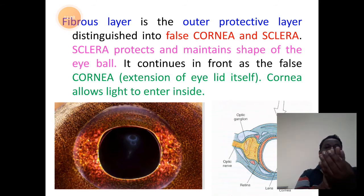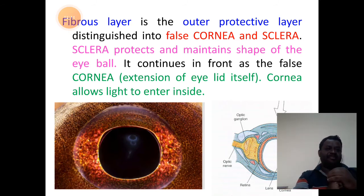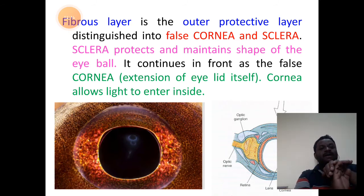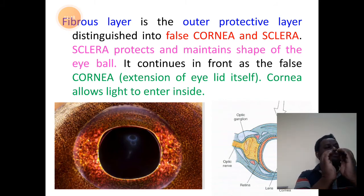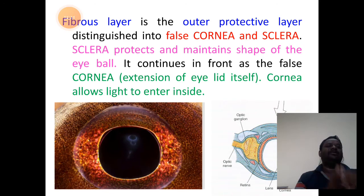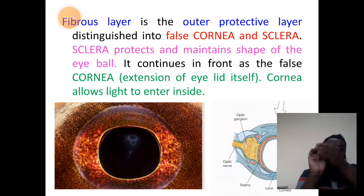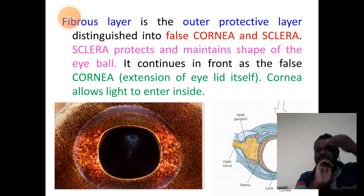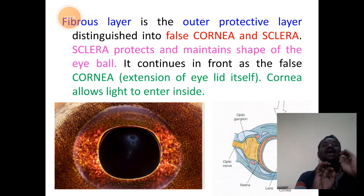At the front, the fibrous layer forms the cornea, whereas at the back it forms the rest of the region, the sclera. Sclera acts as a protective structure that maintains the shape of the eyeball. In front, it continues to form the cornea, which is said to be a false cornea because it is an extension of the eyelid itself.